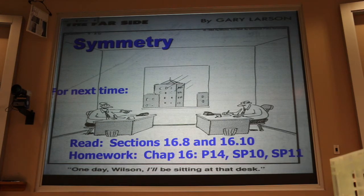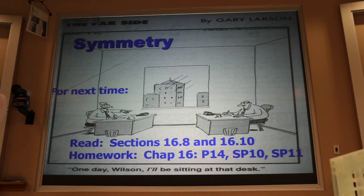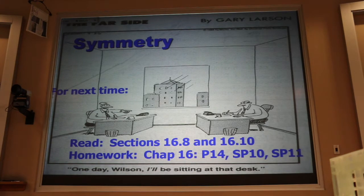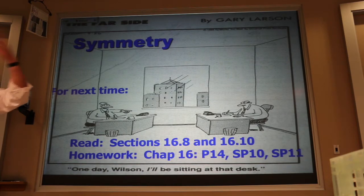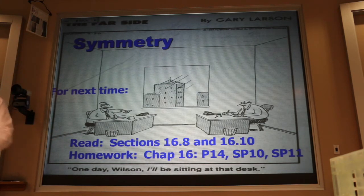That's how we got field lines for a spherical charge distribution. For a point source, the charge looks the same when I rotate my head by any angle—it has spherical symmetry. The field lines should also have spherical symmetry, and indeed they go out in every direction, evenly spaced, with the same symmetry.